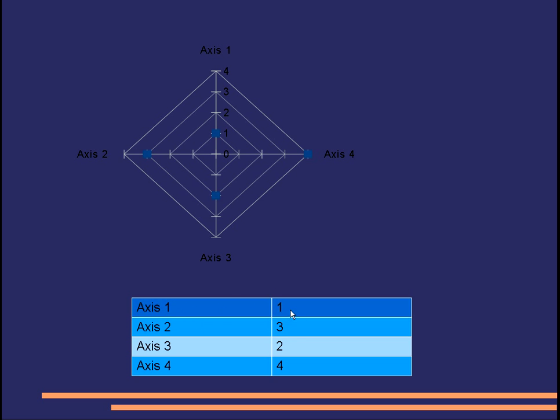axis 1 has a value of 1, so we come along axis 1 and we've got a dot at 1. Axis 2, we've got a dot at number 3. Axis 3, we've got a dot at number 2. And axis 4, we've got a dot at number 4.